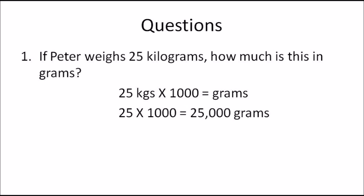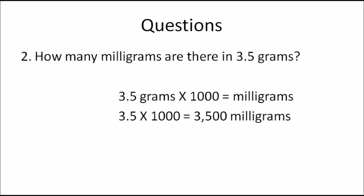Question 2: How many milligrams are there in 3.5 grams? You need to find milligrams, so multiply by 1000. 3.5 × 1000 = 3500 milligrams. Grams is the larger unit compared to milligrams, so you multiply by 1000 and get a larger answer.